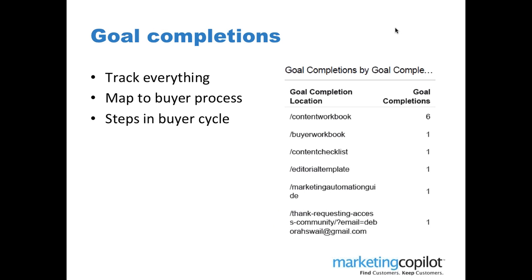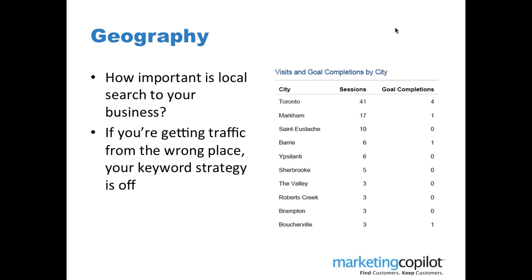On our website, we have a number of workbooks for people to download, but our main call to action is driving people to our content marketing workbook. Over a two-week period, we had more downloads on that workbook than on other items further into the site. This tells us our primary call to action is working fairly well and that people are completing goals on the site.